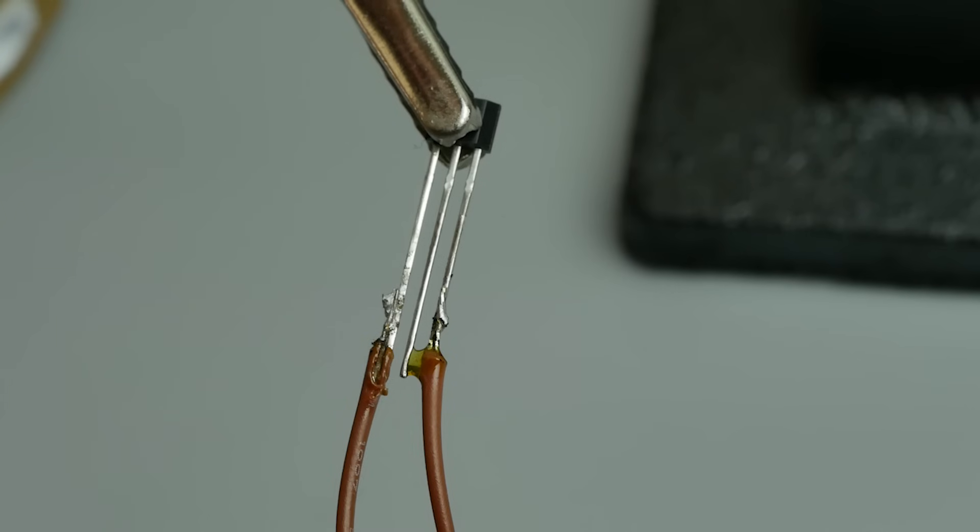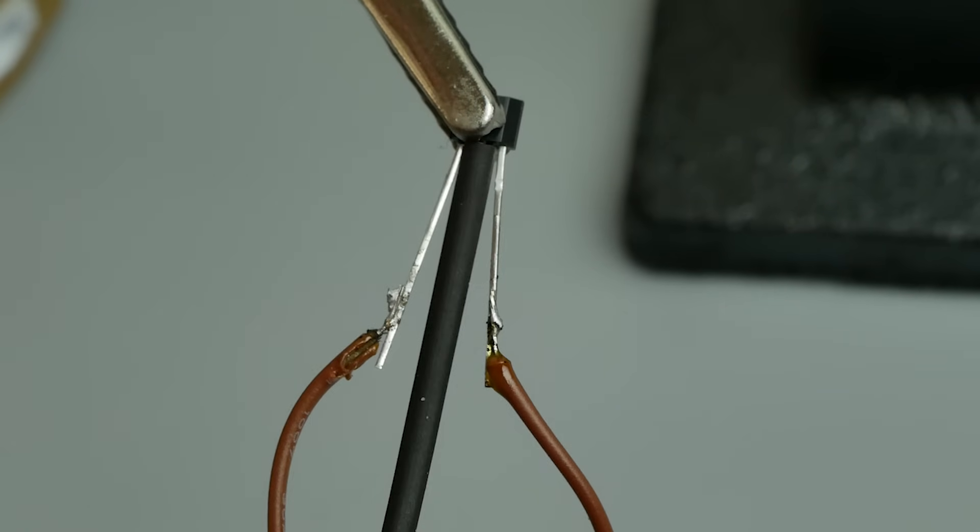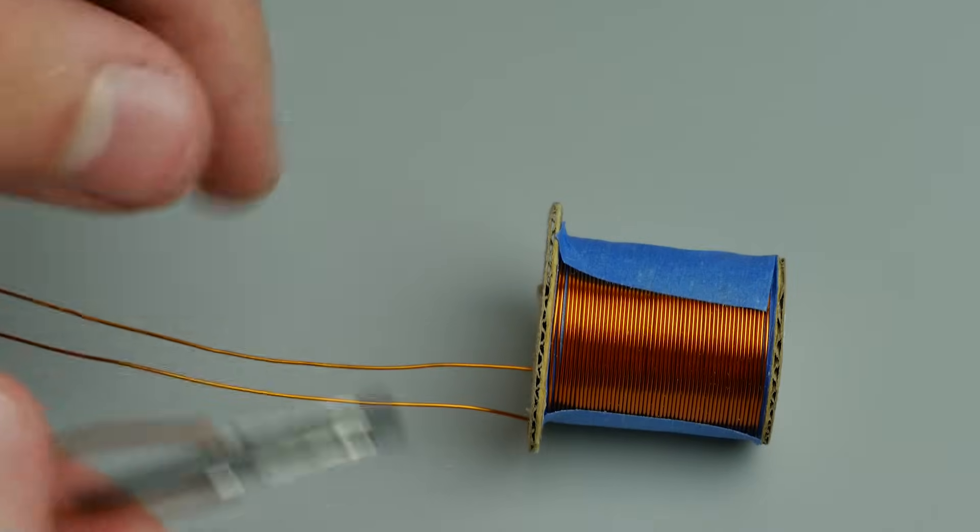Hall sensor soldered to wires, because it will be located inside the coil. And, in fact, we're done.